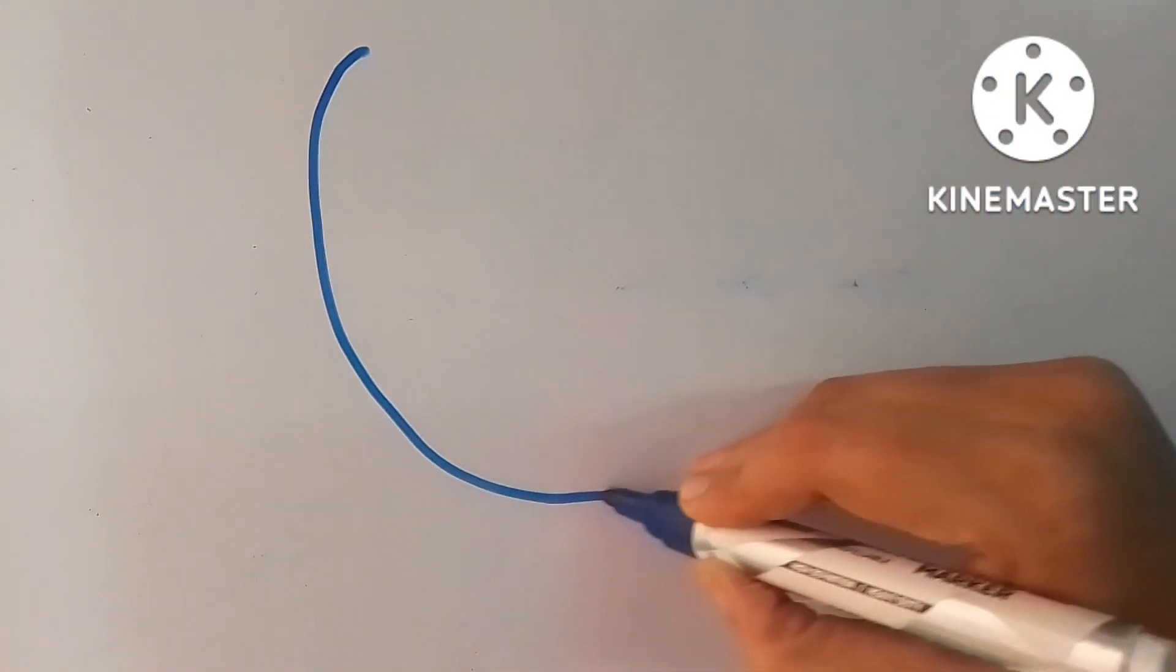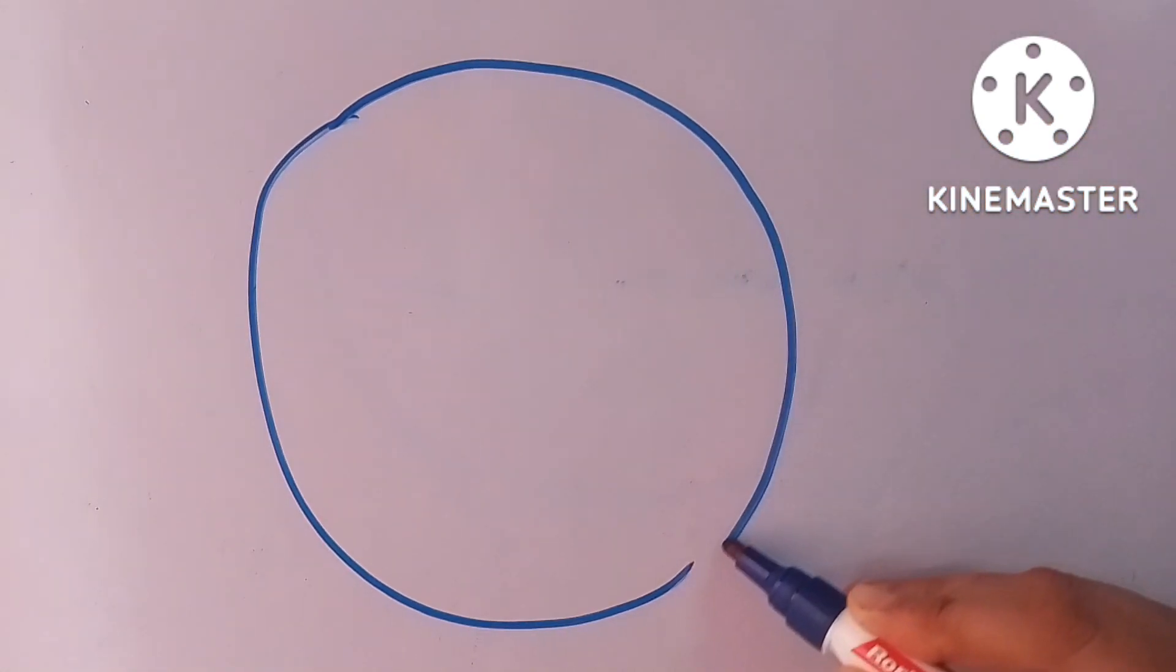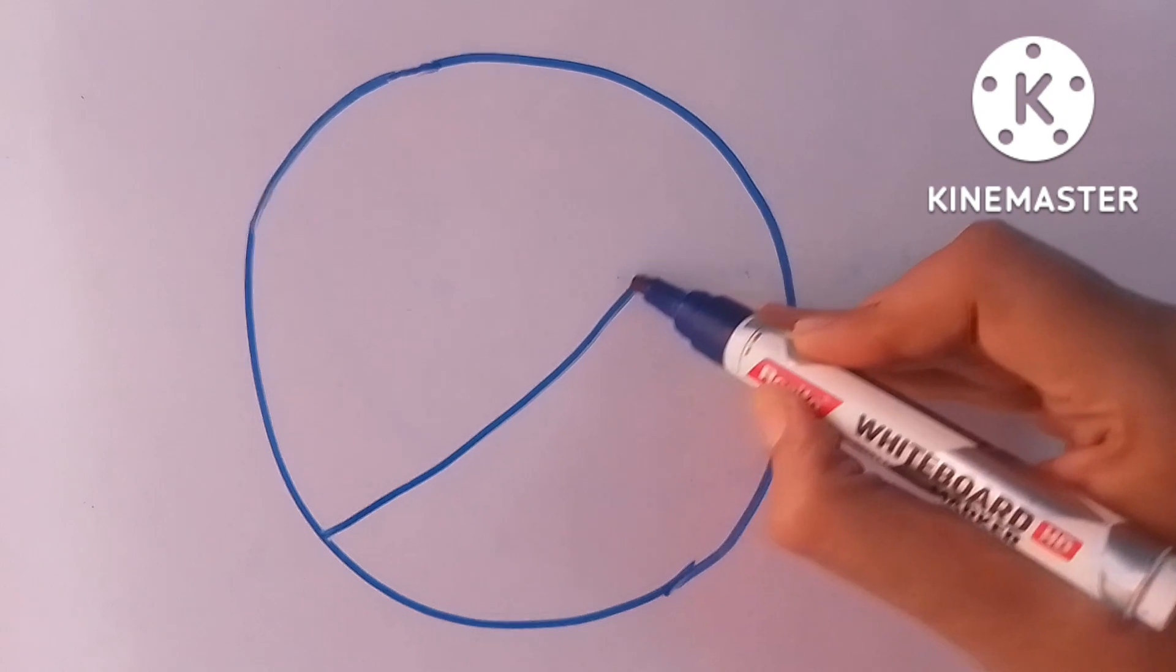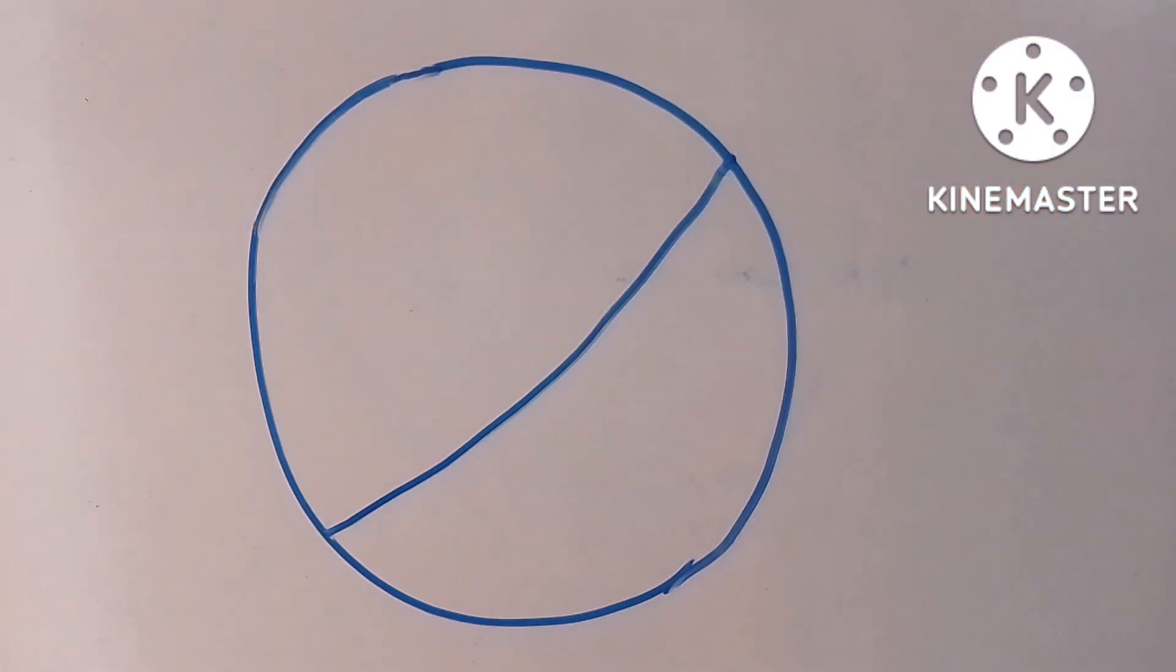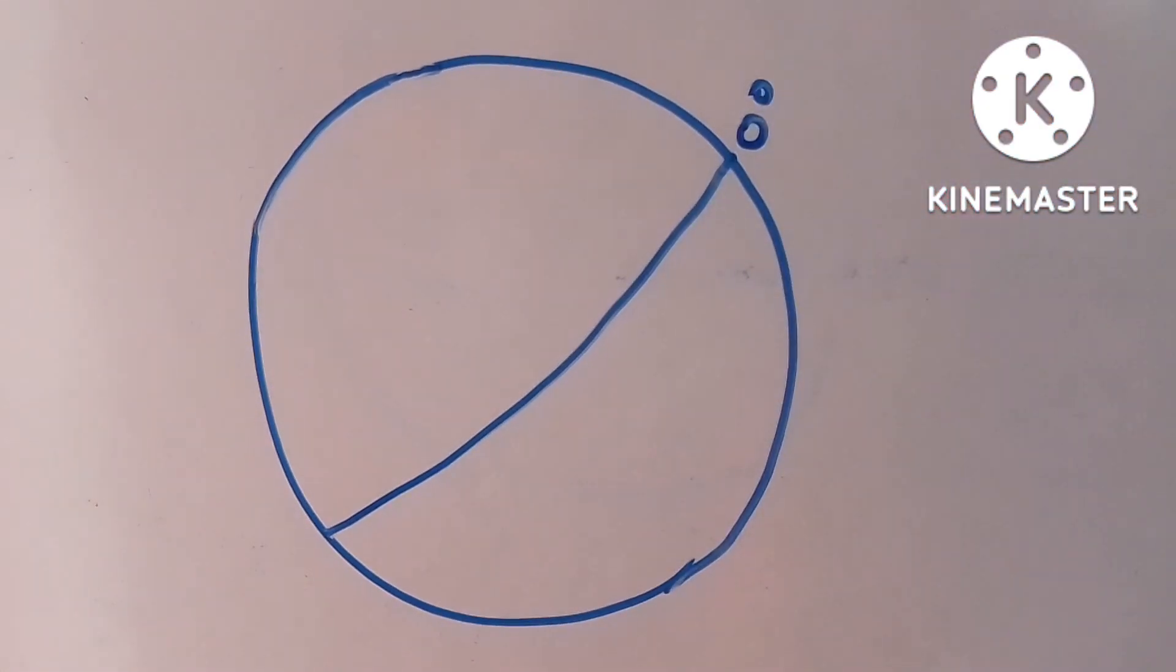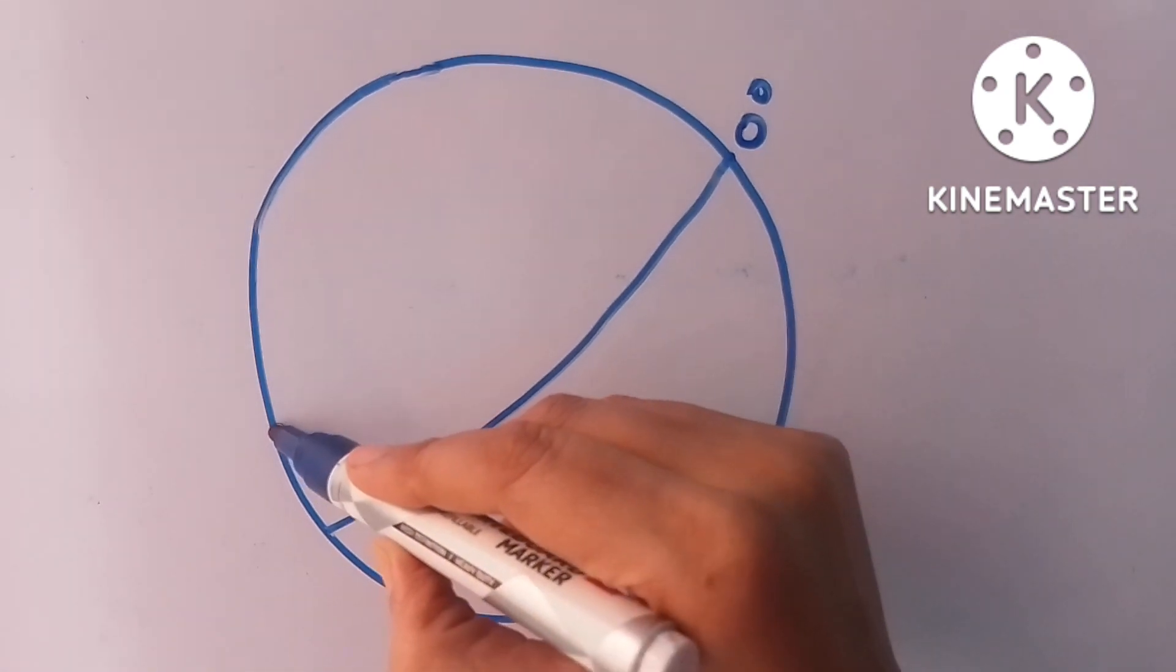Here I am drawing a rough sketch of latitudes and longitudes to explain this clearly. At first I am drawing the main latitude on the earth that is equator. Equator is an imaginary line situated at zero degree latitude and it divides the earth into equal two halves.